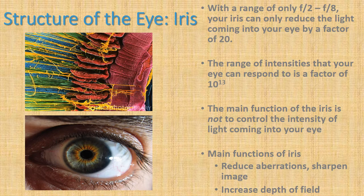The range of intensities that your eye can respond to is a factor of 10 to the power of 13. Therefore, the main function of the iris is not to control the intensity of light coming into your eye — its main functions are to reduce aberrations and sharpen the image.